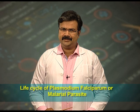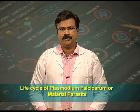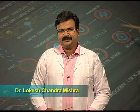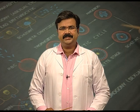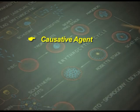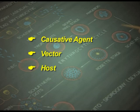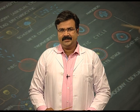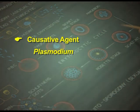Dear students, today we will study about the life cycle of Plasmodium falciparum, or malarial parasite. For this, we need to understand three terms: causative agent, vector, and host. The Plasmodium, which is a protozoan parasite, is the causative agent.